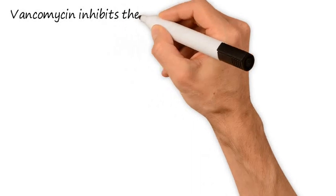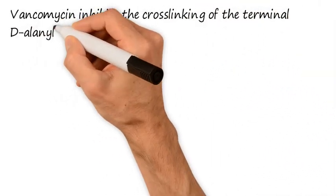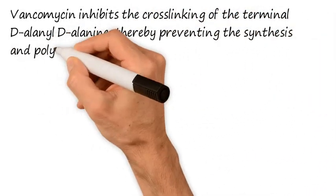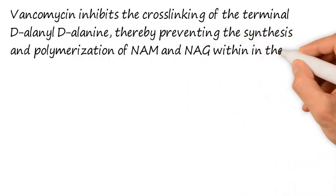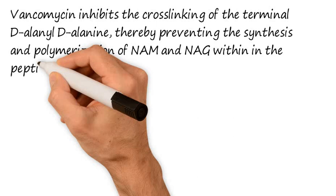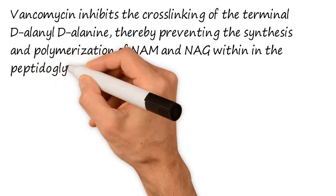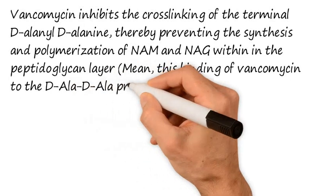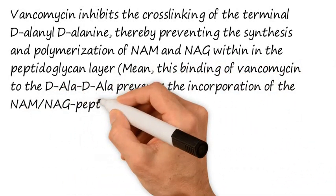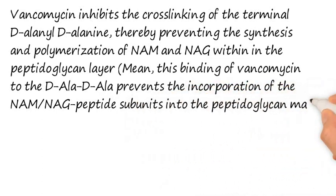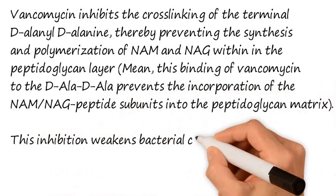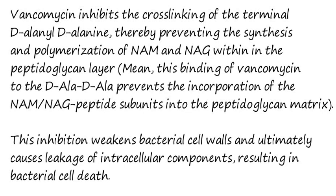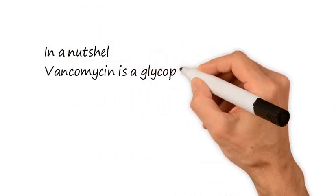When vancomycin is given, it inhibits the cross-linking of the terminal D-alanyl-D-alanine, thereby preventing the synthesis and polymerization of NAM and NAG within the peptidoglycan layer. This binding of vancomycin to D-alanyl-D-alanine prevents the incorporation of NAM-NAG peptide subunits into the peptidoglycan matrix. This inhibition weakens the bacterial cell wall and ultimately causes leakage of intracellular components, resulting in bacterial cell death.